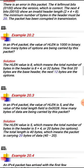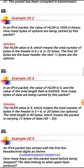Example 2: In an IPv4 packet, the header length field value is 1000 in binary, which equals 8. The total number of bytes in the header is 8 × 4 = 32 bytes. The first 20 bytes are the fixed base header, and the next 12 bytes are the options. So this packet carries 12 bytes of options.